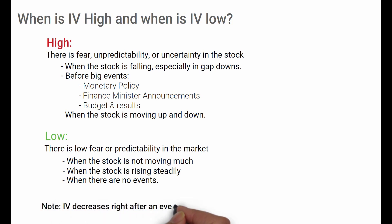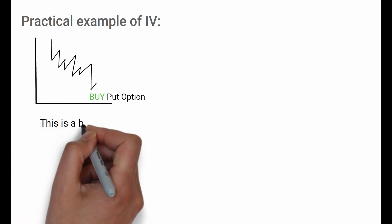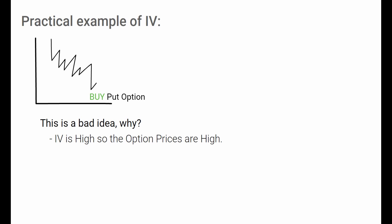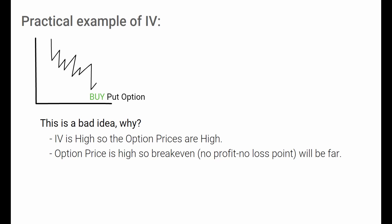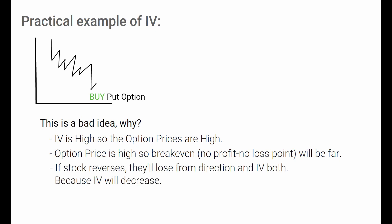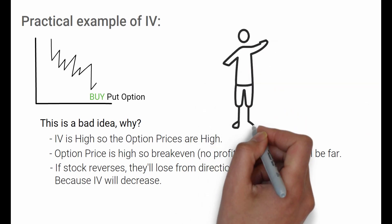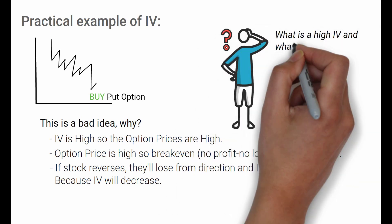One important point: IV decreases right after an event is over. A practical example — many people buy put options when a stock has already fallen or during high-fear situations like gap-down openings. This can get really ugly because the IV will be high, making the option price very expensive. Even if they get the direction right and there is a further fall, the breakeven will be far. If they get the direction wrong and the stock bounces, they lose money on both the direction and the fall of IV.